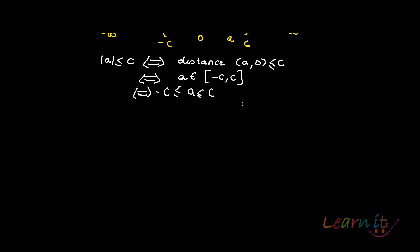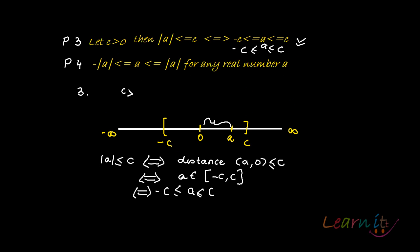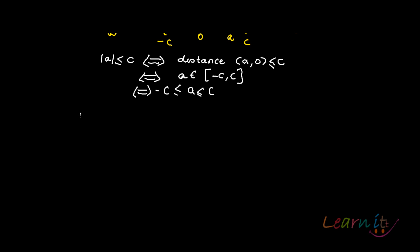In the fourth property, we are trying to say that minus of absolute value of a is less than or equal to a, and a is less than or equal to the positive absolute value. Basically, a lies between the negative and positive absolute values.